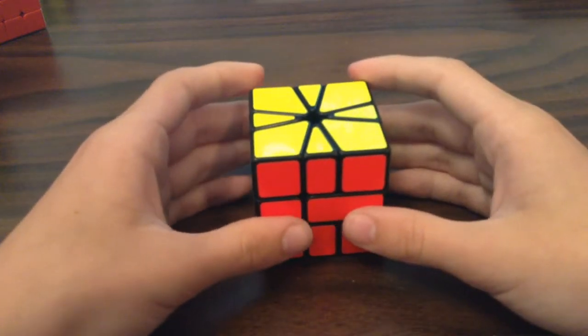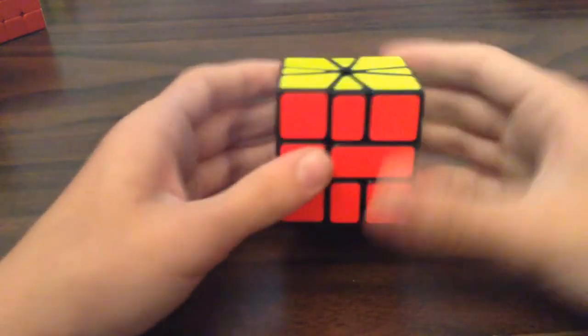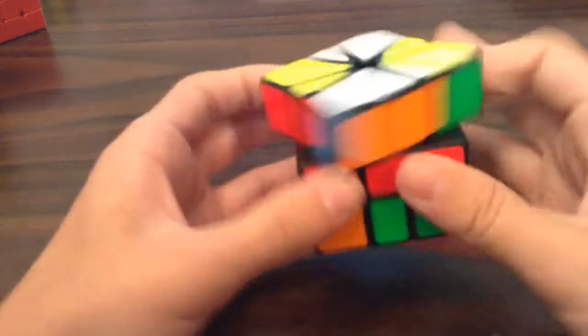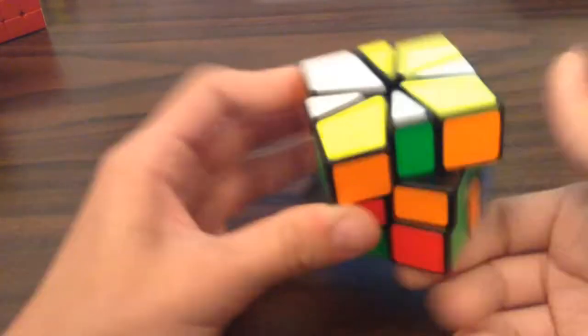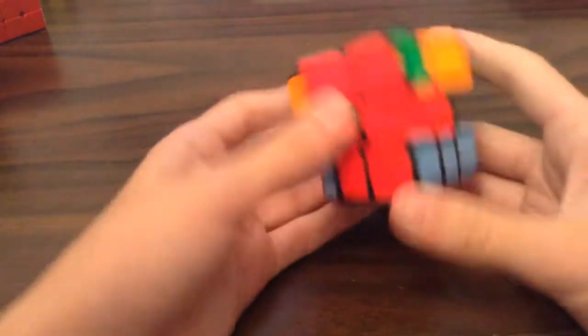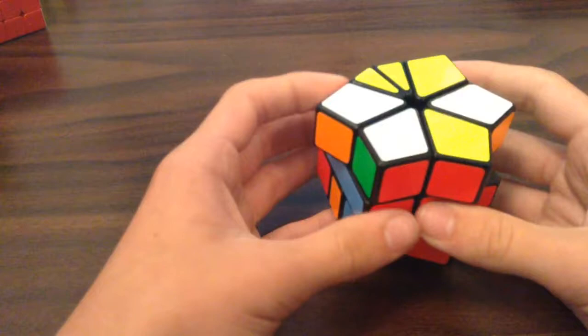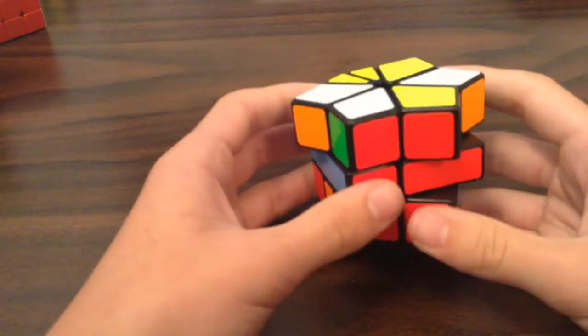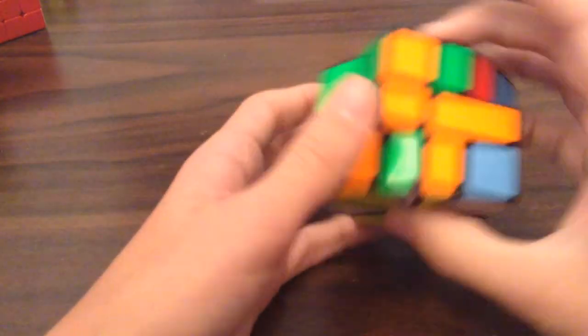Hey guys, today I'll be doing five square one walkthrough solves. I'm using the cubicle key square one, which is my main, and I average around like 10.5. So, here's the first scramble.